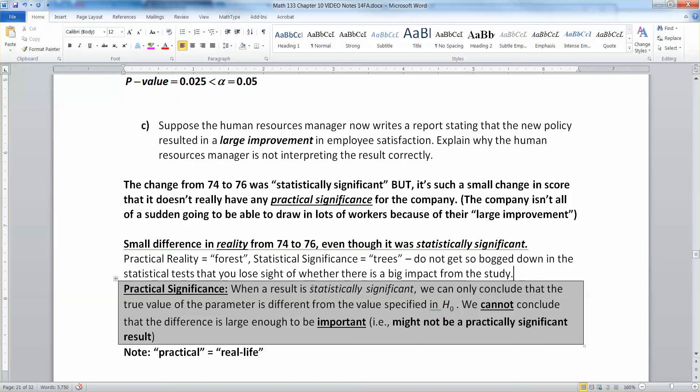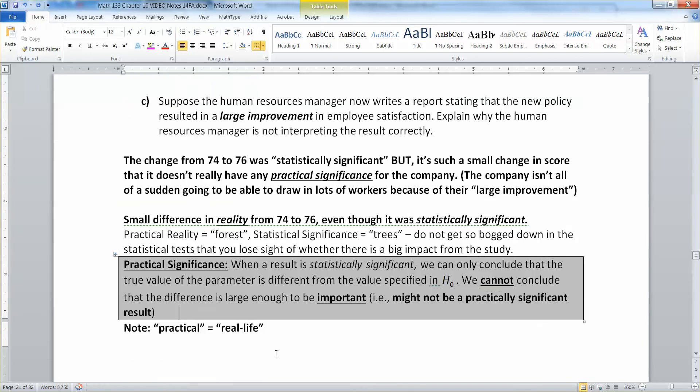So when a result is statistically significant, all we can conclude is that the true value of the parameter is different than the value specified in the null hypothesis. That's it. We cannot conclude that the difference is large enough to be important. In other words, it might not have very great practical significance, real life significance for us.